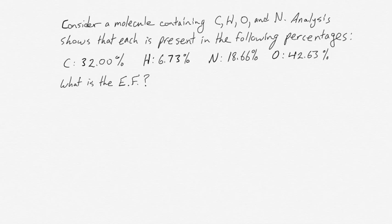In this example, we'll be calculating an empirical formula based on percentages of each atom within the compound. We can do this because empirical formulas relate relative numbers of each atom within a compound. We don't typically work in numbers of atoms — we typically work in moles — so we're going to have to convert those percentages into moles somehow.